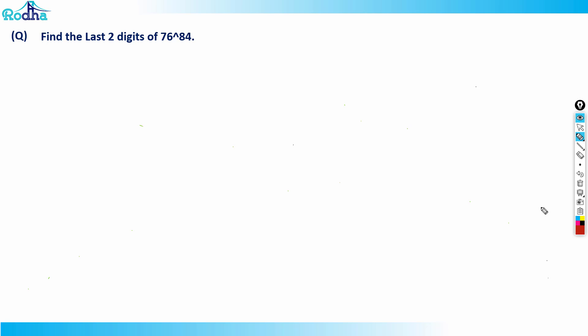Let's look at this question: find the last two digits of 76 raised to 84. A lot of concepts will be revised here. There is a shortcut for all numbers ending in one — for any last two digits ending in one, there's a direct shortcut.